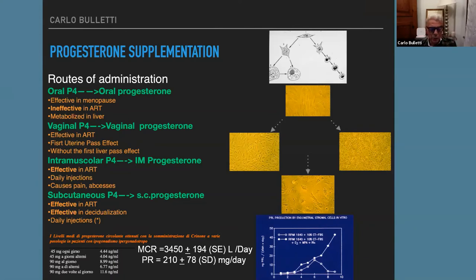When we administer 45 milligrams per day, we have a circulating level of 4.44 nanograms. When we give 90 milligrams per day, we have mean levels of about 9 nanograms. And when we use it twice per day, we have about 11 to 12 nanograms per milliliter.